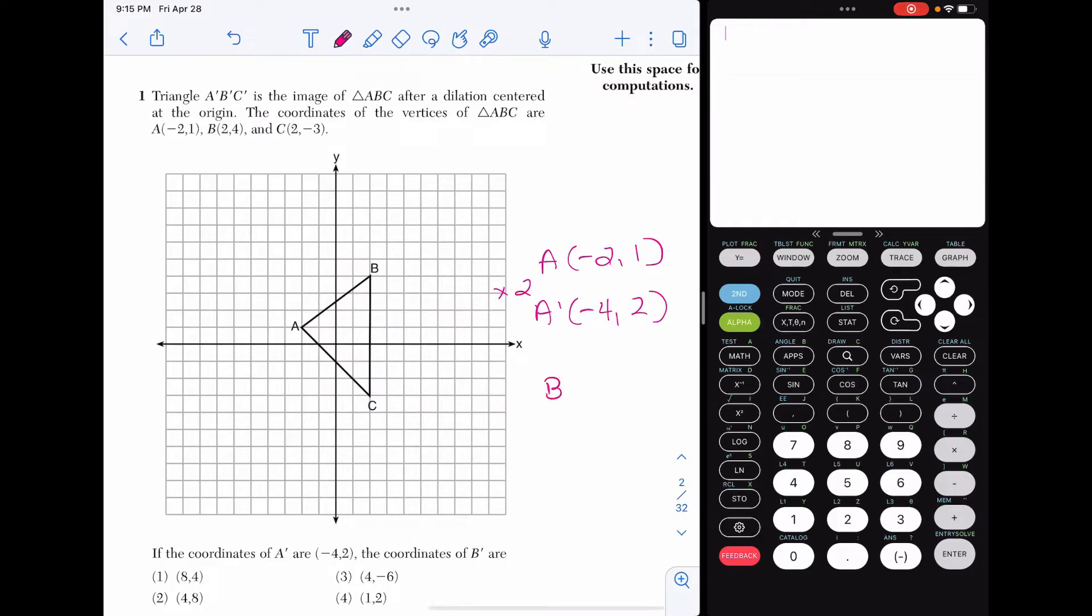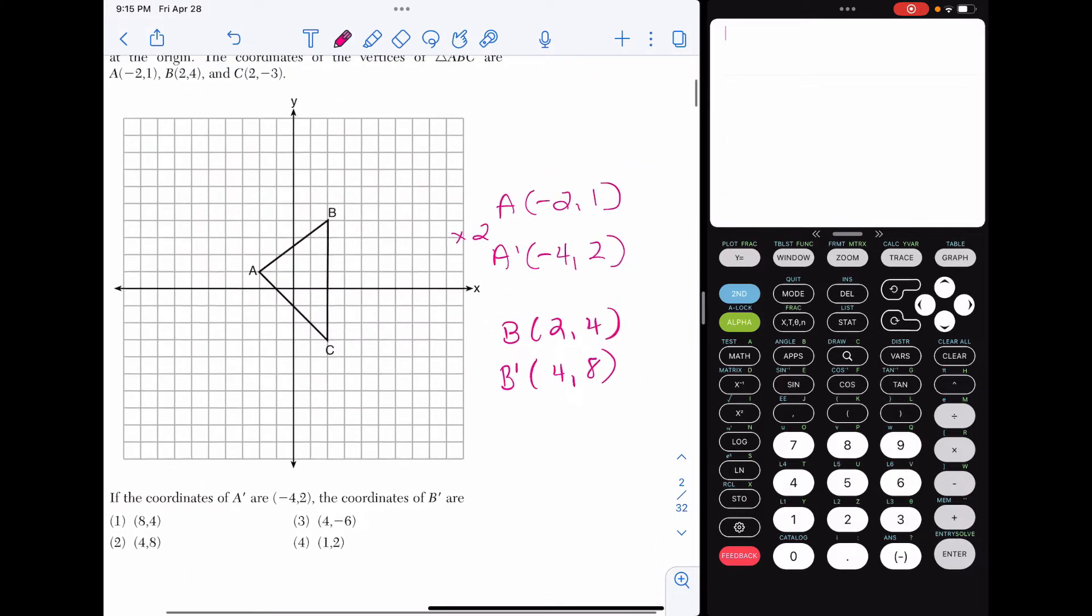So let's follow that same pattern with B. If B is 2, 4, to get B prime, we're going to multiply those two coordinates by the scale factor, and we get choice 2, which is 4, 8.